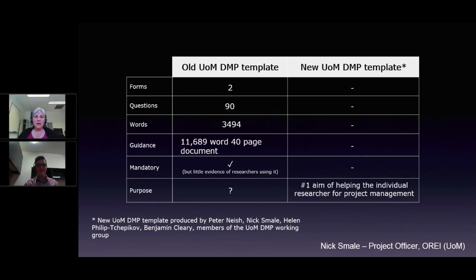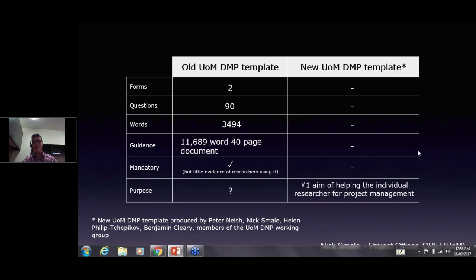Now Nick Smale talks about what's happening at the University of Melbourne. The University of Melbourne developed a DMP in 2011 containing two separate forms, about 90 separate questions, a template with three and a half thousand words, and a 12,000-word, 40-page guidance document called 'Procedures and Guidelines for the Management of Research Data and Records' that you were supposed to read to complete the document. Although it was mandatory according to policy, there's very little evidence of any researchers actually doing it of their own free will, and it had no definite stated purpose — just vague words around data management. This is what you might call a monster DMP: just huge, and it made no inroads into the research community at all.